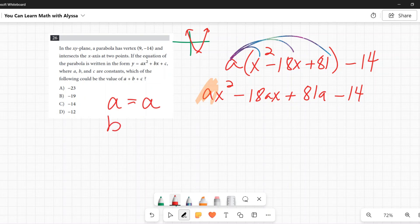My b is the coefficient of the x, which is negative 18a. And then finally, my c is my constant, which is these two together, because a is a constant.